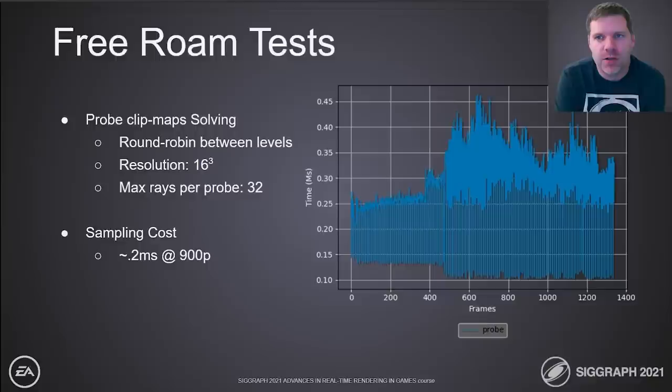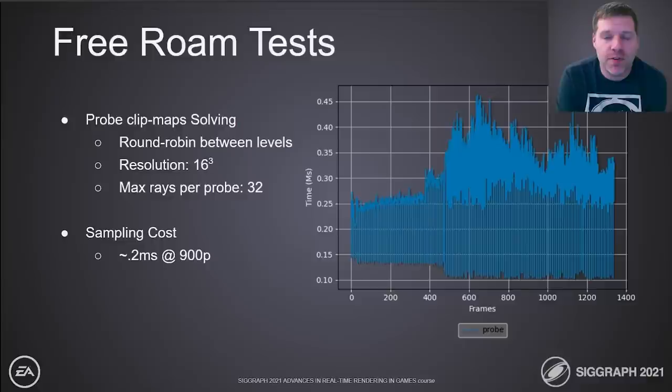For the ClipMap probe cost, we have a three-level clip map following the same route through the PVZ level. We cycle which clip map level we solve every few frames. The third clip map is the cheapest, as most rays are misses. If we were to sample every pixel full-screen at 900p, the sampling cost is roughly 0.2 milliseconds.